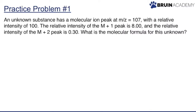Our first problem asks us: we have an unknown substance with a molecular ion peak at m/z equal to 107 with a relative intensity of 100. The relative intensity of the M+1 peak is 8, and the relative intensity of the M+2 peak is 0.3. So what is the molecular formula?